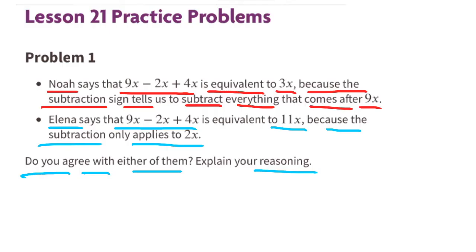Problem number 1. Noah says that 9x minus 2x plus 4x is equivalent to 3x because the subtraction sign tells us to subtract everything that comes after 9x. Elena says that 9x minus 2x plus 4x is equivalent to 11x because the subtraction only applies to 2x. Do you agree with either of them? Explain your reasoning.